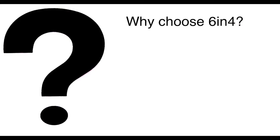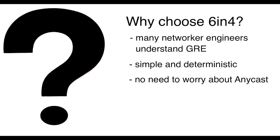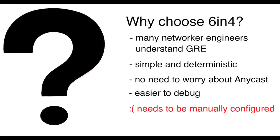There are good reasons to choose 6in4. GRE is well understood by many networkers. 6in4 is simple and deterministic — there's no anycast to worry about, so debugging is simplified. And it's controlled by two endpoint administrators, which is again nice for debugging. The disadvantage to 6in4 is the manual configuration necessary.